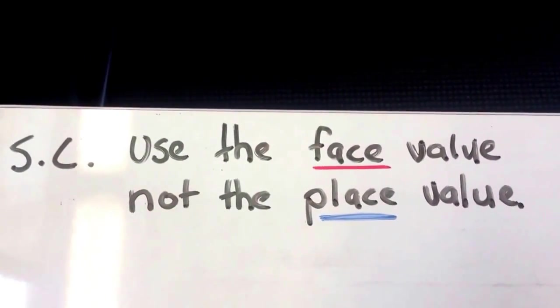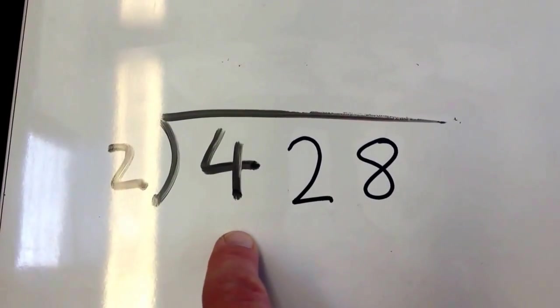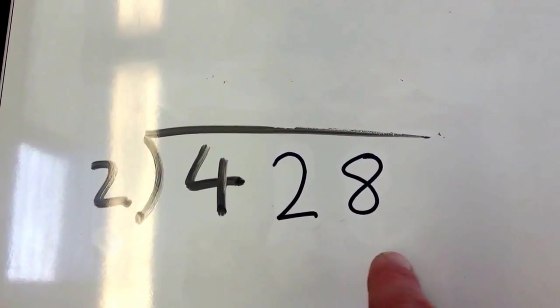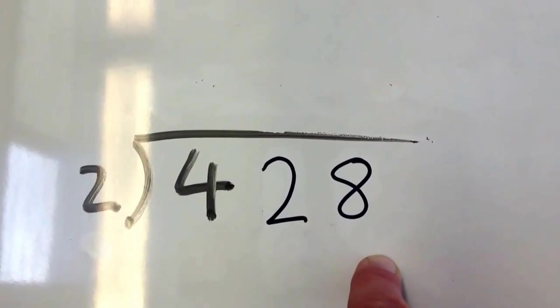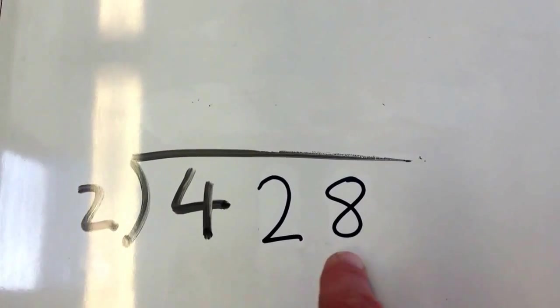What I mean by that is, if we look at 428, this is 400s, 20s, and 8 ones. But in this case, I want you to look at just the face value: 4, 2, and 8.